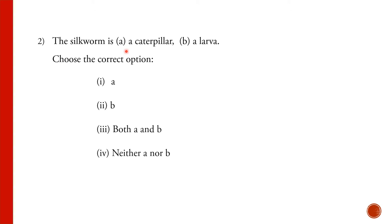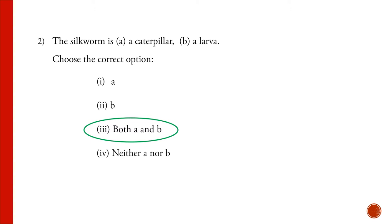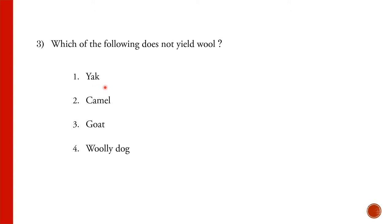The silkworm is: a) a caterpillar, b) a larva. The options are: option one - a, option two - b, option three - both a and b, option four - neither a nor b. The correct option is both a and b. The silkworm is both a caterpillar and a larva — it is the larva or caterpillar that hatches out of the egg of the silk moth.